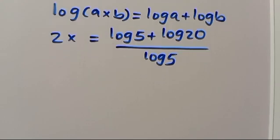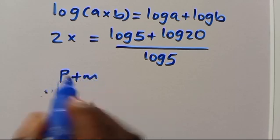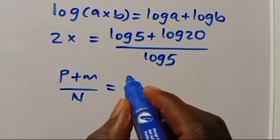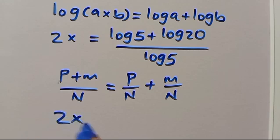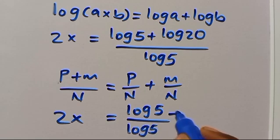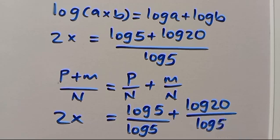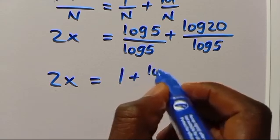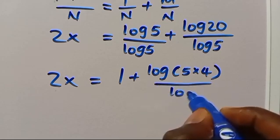Recall that when we have p plus m over n, where p, m, n are constants, we can split this as p over n plus m over n. So from here we have 2x equals log 5 over log 5 plus log 20 over log 5. Since log 5 divided by log 5 equals 1, we have 2x equals 1 plus log 20 over log 5. We can also write 20 as 5 times 4.